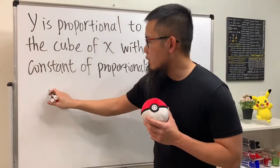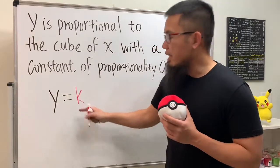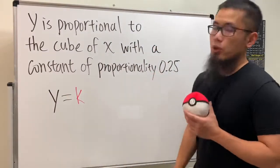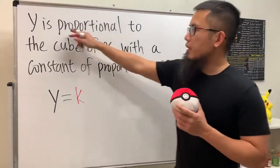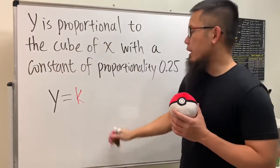We know that it's going to be y equals some number k, and the k is exactly the constant of proportionality. And because right here it doesn't say inverse, you're just going to multiply. So you are going to multiply with x.